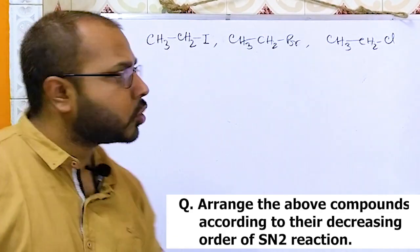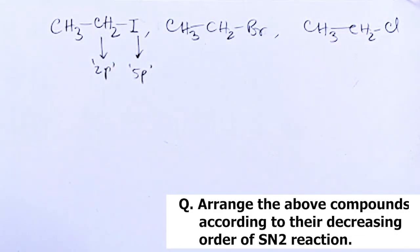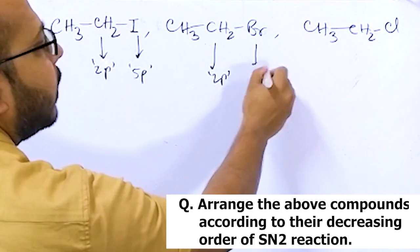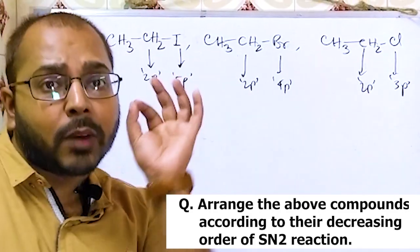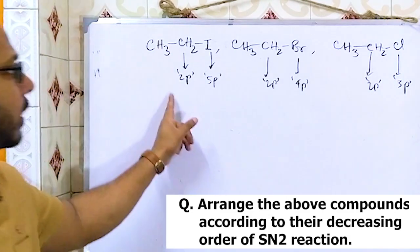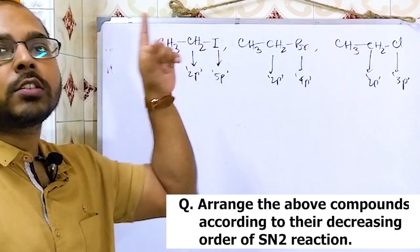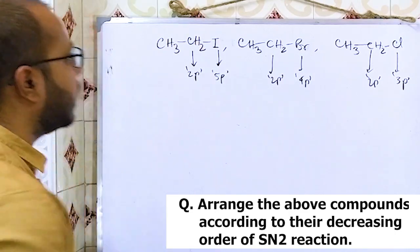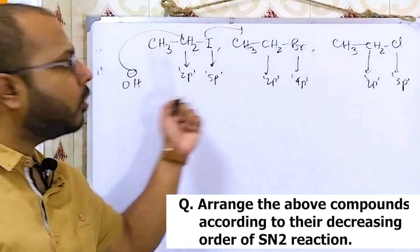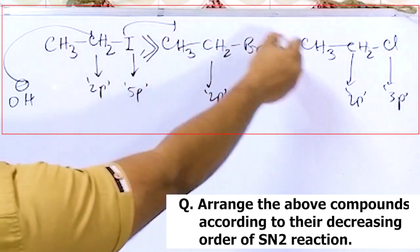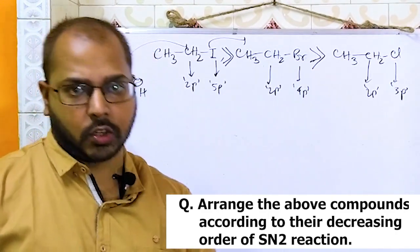Carbon is 2p; iodine is 5p, bromine is 4p, chlorine is 3p. The 2p-3p overlap is much stronger than 2p-4p, and much stronger than 2p-5p. So the C-I bond is the weakest, making iodine the best leaving group. Therefore, SN2 rate order is: CH3CH2I > CH3CH2Br > CH3CH2Cl.